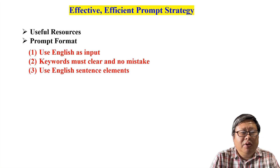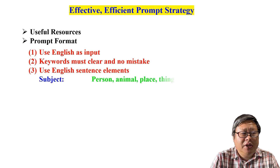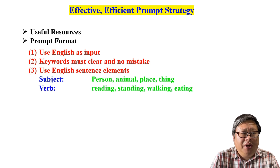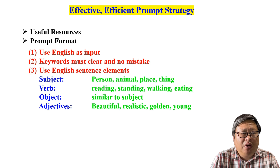Third, use normal English sentence elements to express your topic: Subject — person, man, girl, animal, place, thing, etc. Verb — reading, standing, walking, eating, etc. Object — similar to subject. And adjective — beautiful, realistic, golden, young, etc.